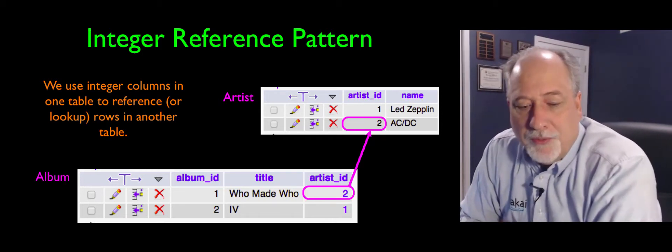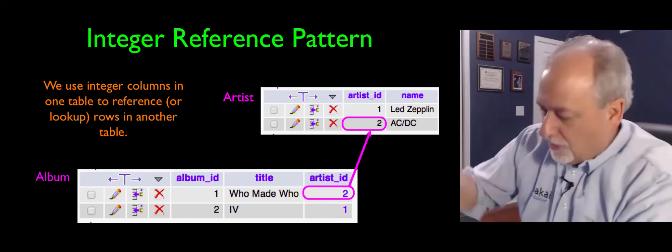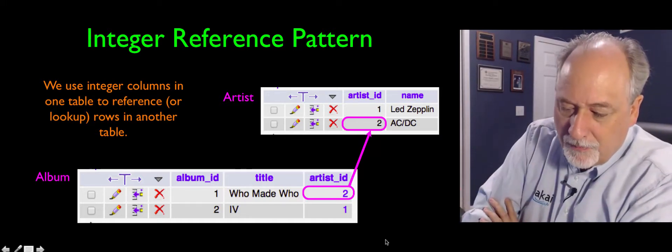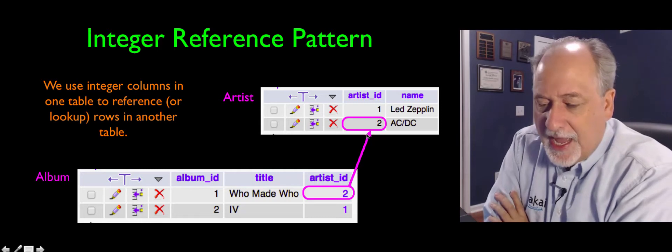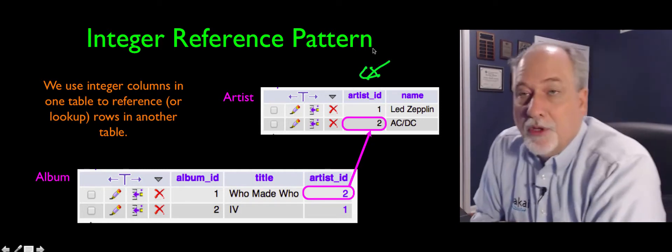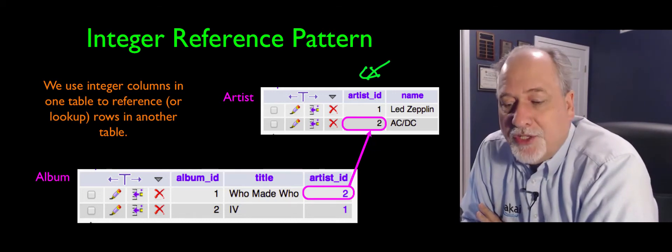So if we were to model the relationship between artist and album in our little database here, we would have to add to the artist table a key. We'll call this artist underscore ID just by convention.